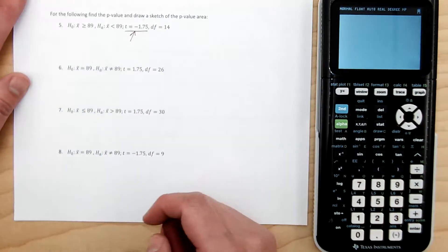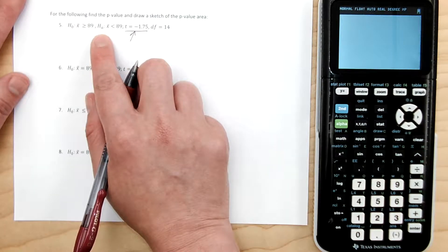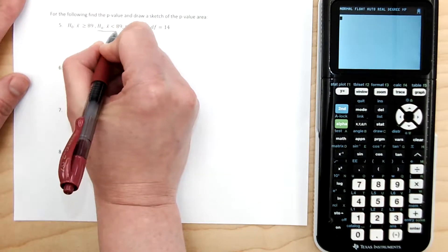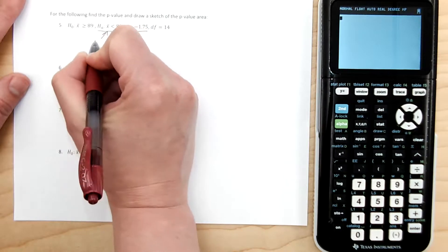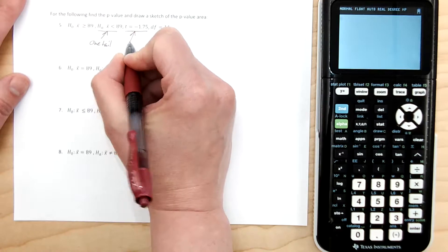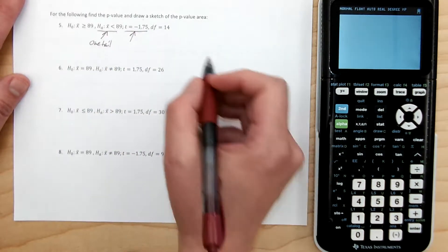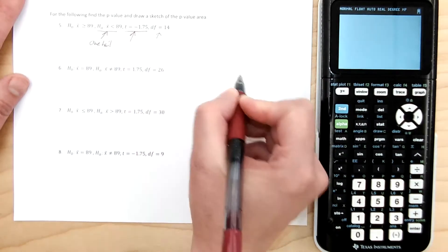So what we want to do is we want to look here. Then we want to ask ourselves, do we have a one-tail or a two-tail test? So we're going to go to the alternative hypothesis. This is a one-tail, and we know that our T-score is negative 1.75, and we know that we have degrees of freedom of 14.